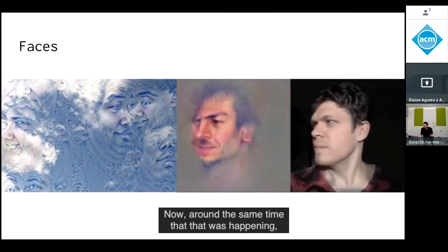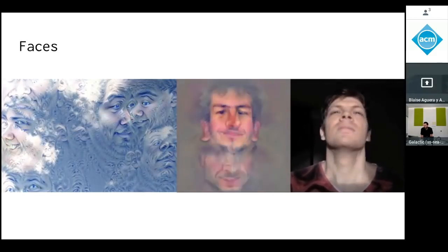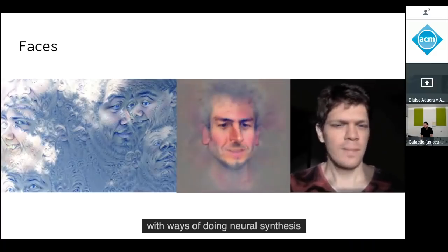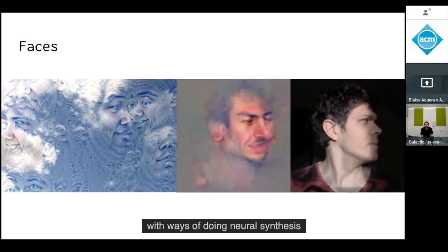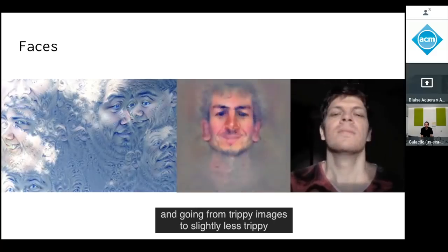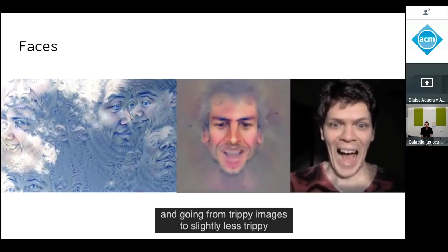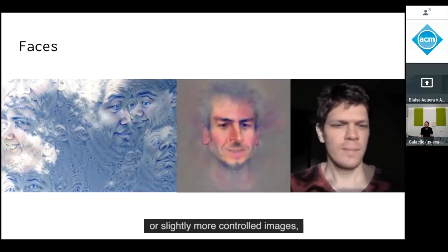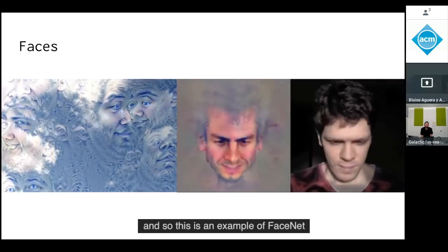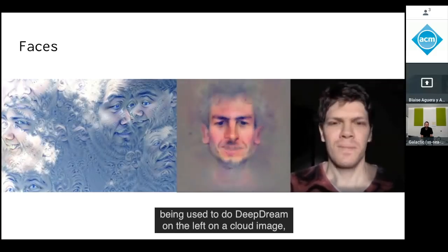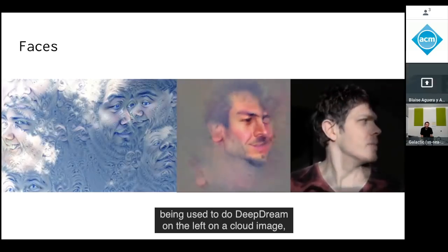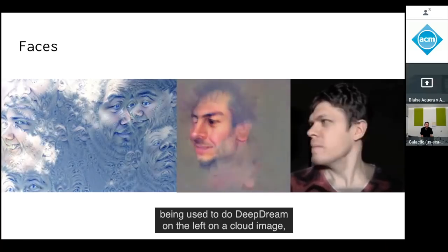Around the same time, we were experimenting with ways of doing neural synthesis — going from trippy images to slightly more controlled images. Here's an example of FaceNet being used to do Deep Dream on a cloud image on the left, while the inventor of Deep Dream drives the embedding of my face in FaceNet with his face.